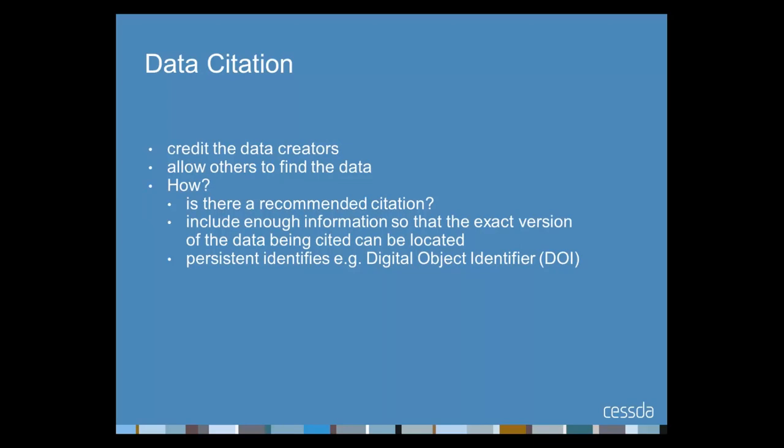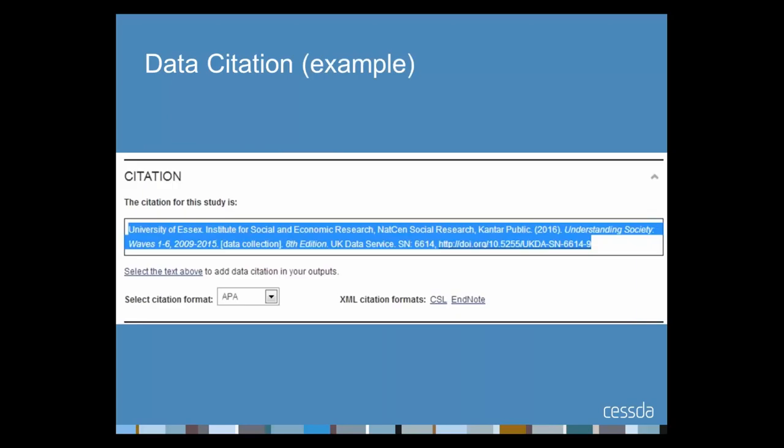When using existing data, it is good practice to cite the data. Data citations give credit to the data creators and allow other researchers to find the data. In general, the citation should include enough information so that the exact version of the data being cited can be located. Many services provide a recommended citation for each of their data collections, and some also provide a persistent identifier such as a Digital Object Identifier (DOI). Here's an example from the UK Data Service for Understanding Society.